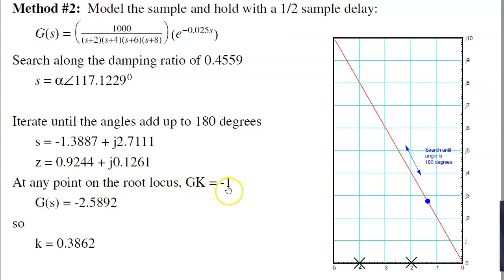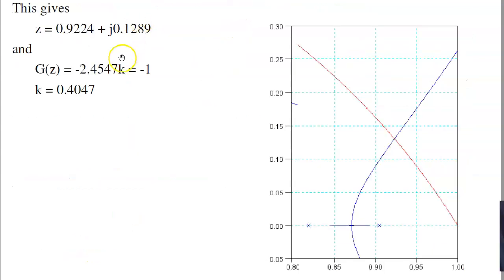At that point, g times k should be minus 1. Analyze this system. I get minus 2.58. The minus sign says I'm on the root locus. That's good. The gain's wrong. To make the gain 1, k is 0.3862. And it's a little bit different.